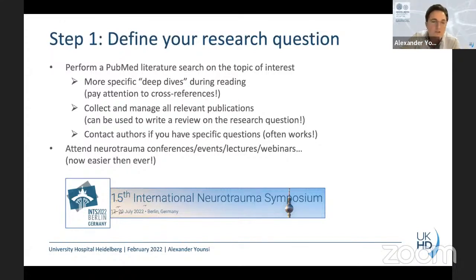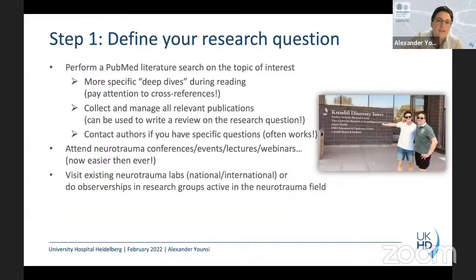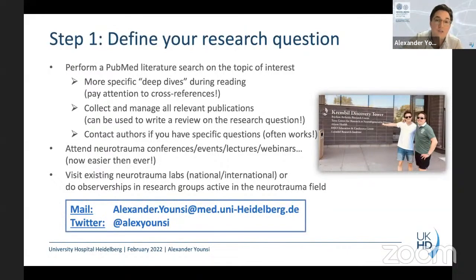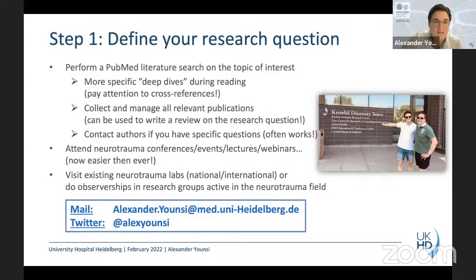I would recommend visiting a lab that's already existing or doing an observership in a very active group. I went to Toronto to Michael Fehlings' lab just to get some insights. I'd like to invite everybody interested in neurotrauma research to come to Heidelberg — come and have a look at what we do and learn from people who have done a little bit more than you. After extensive discussion with peers and other researchers, our first research question became: can we improve neuroregeneration after experimental spinal cord injury by transplanting NPCs?